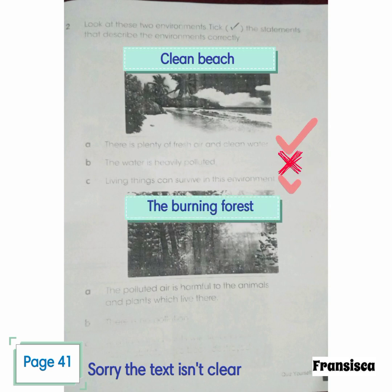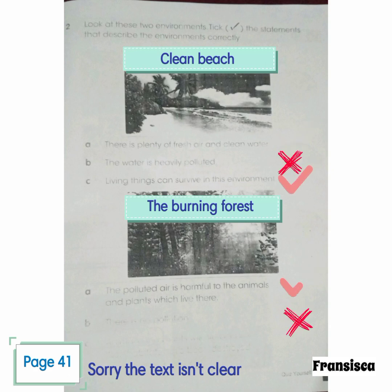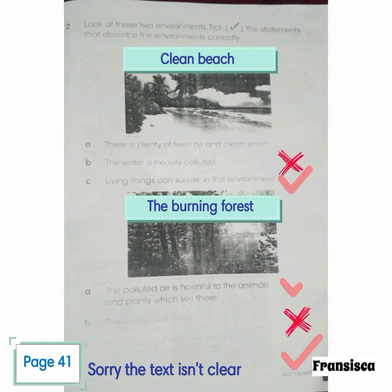Look at the second picture: the burning forest. A. The polluted air is harmful to the animals and plants which live there. Tick. B. There is no pollution. Cross. C. Animals and plants will die because their habitat has been destroyed. Yes. Tick.